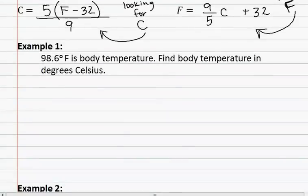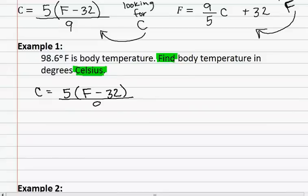In example one, ninety-eight point six degrees Fahrenheit is body temperature. We would like to find body temperature in degrees Celsius. Since it asks us to find body temperature in Celsius, we are looking for Celsius, and we must use the formula C equals five times the quantity F minus thirty-two divided by nine.